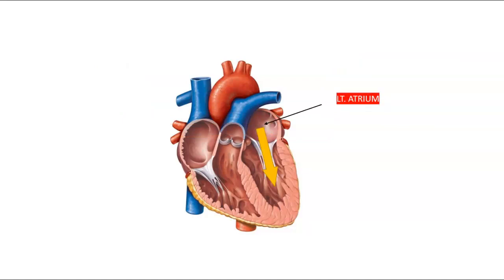From the left atrium, we go through the valve here. It's called the bicuspid valve, also known as the mitral valve, also known as the AV valve or atrioventricular valve, and enter the left ventricle.